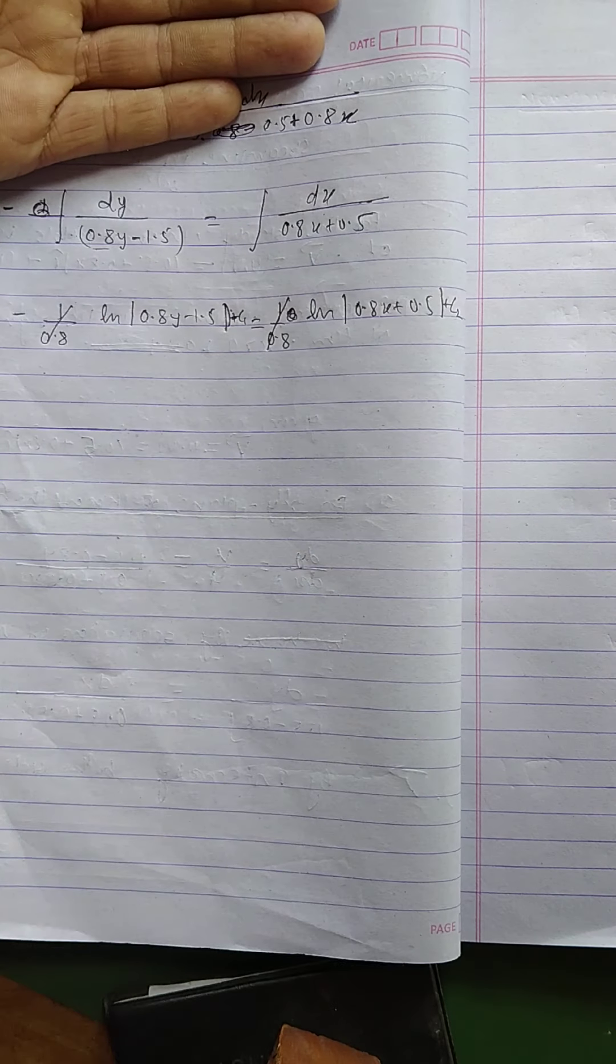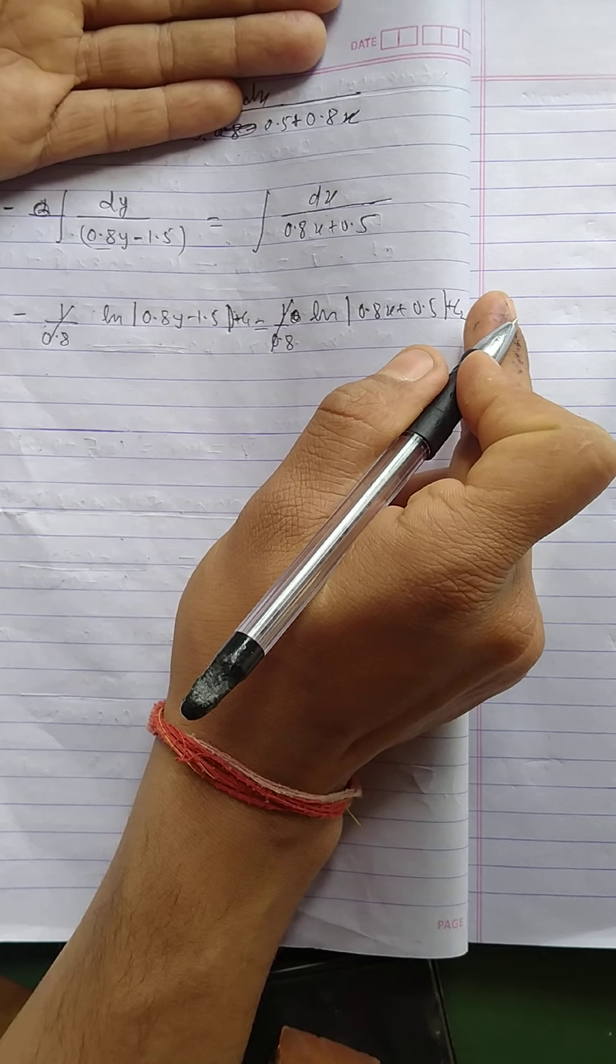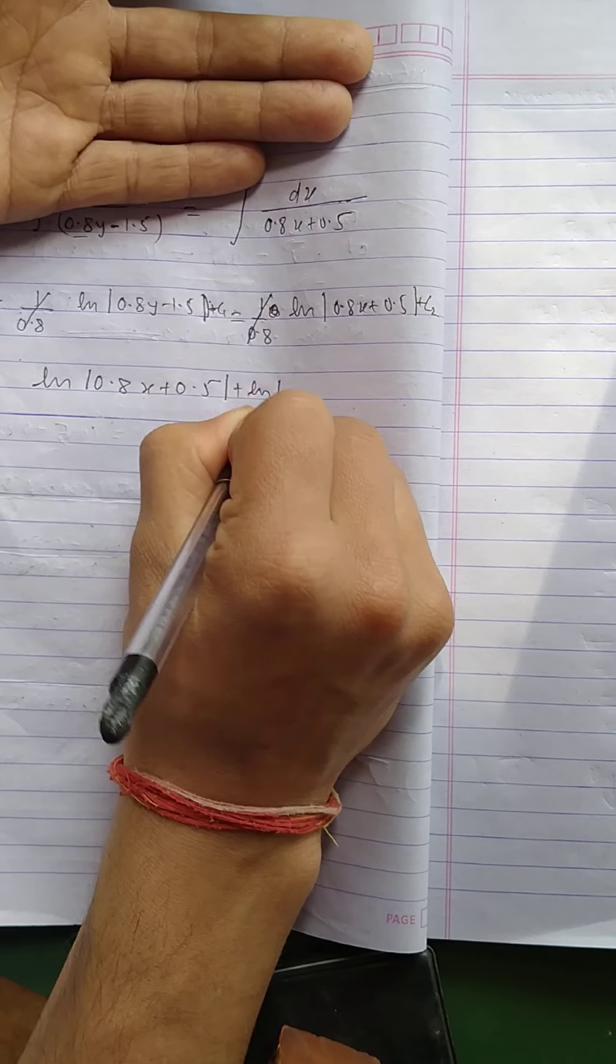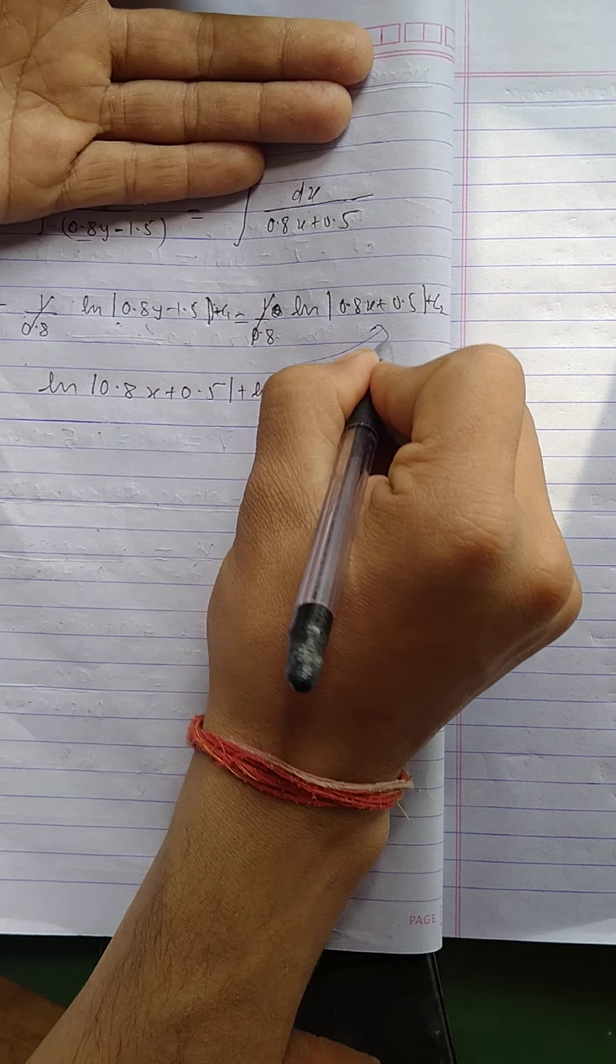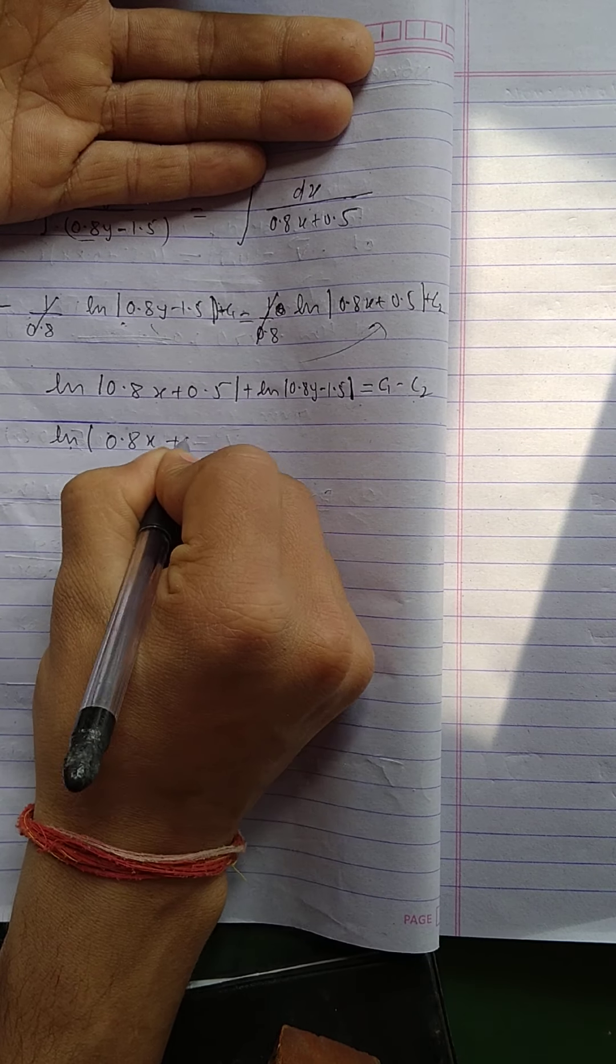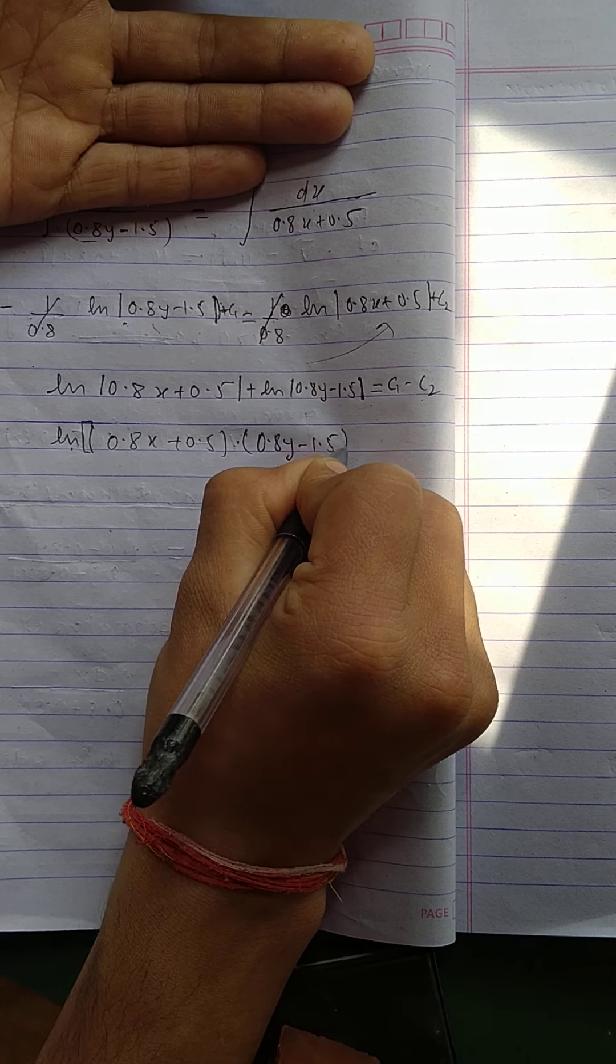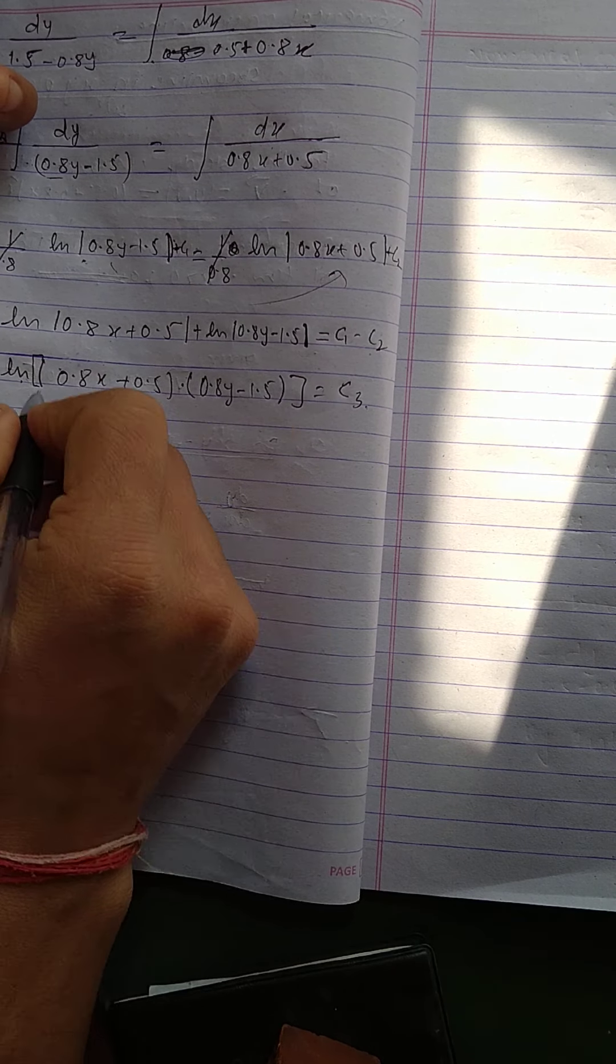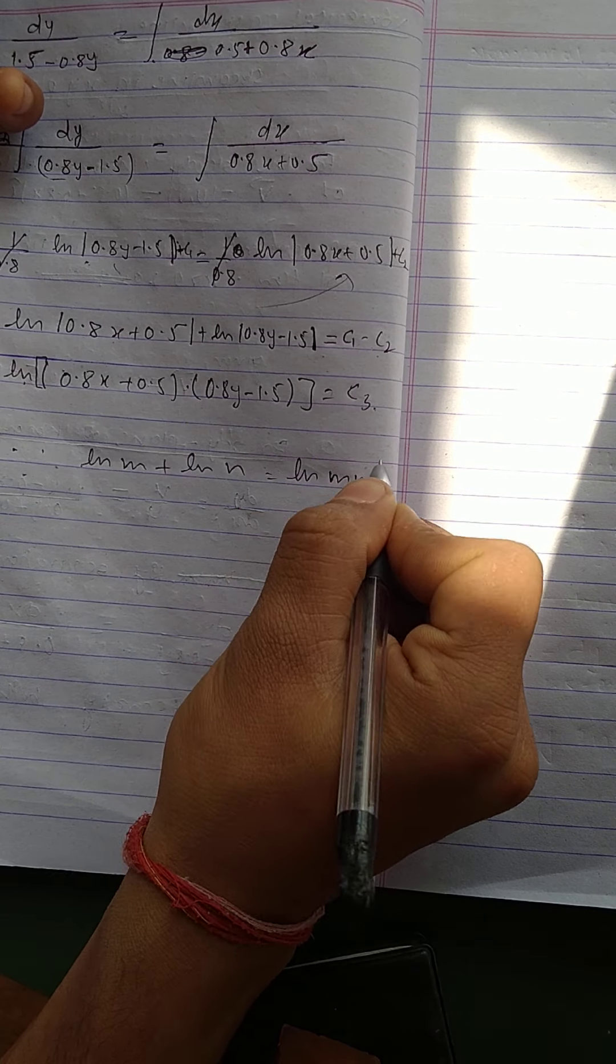Now this will equal in magnitude. I will take this one to this side and c2 to this side. So ln modulus 0.8x plus 0.5 plus ln modulus 0.8y minus 1.5 equals c1 minus c2, which gives c3. Now I had used this formula: ln m plus ln n equals ln mn. So I use this property here.